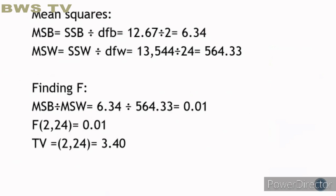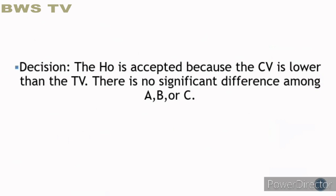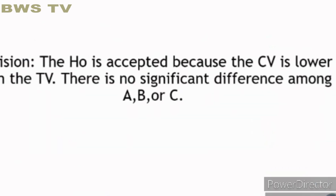Write this as F(2, 24) equals 0.01, where 2 is your DFB and 24 is your DFW. Note that F equals 0.01 is also your computed value (CV). Use the DFB and DFW to look for your tabular value. In this case, your tabular value (TV) is 3.40. Since you now have your CV and TV, you can decide. The decision is that the null hypothesis is accepted because the CV is lower than the TV. There is no significant difference among A, B, or C.